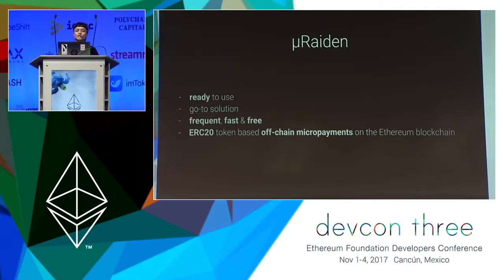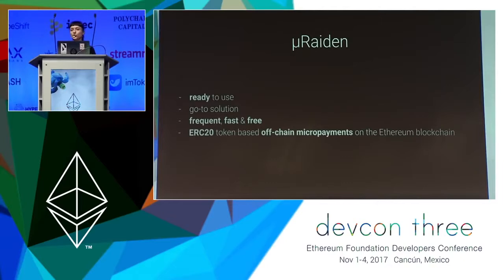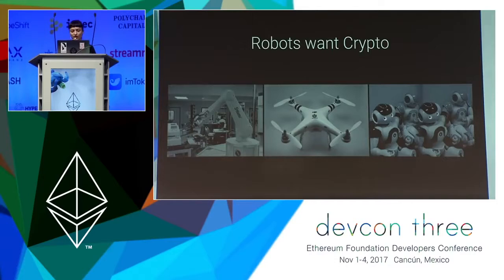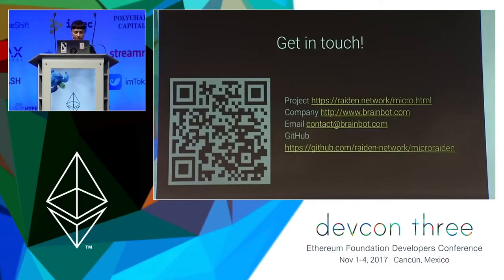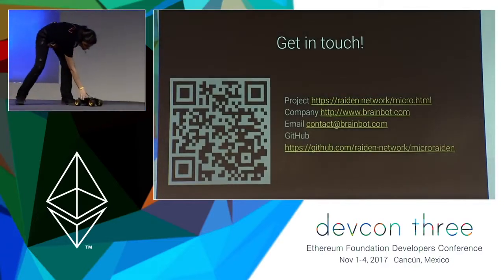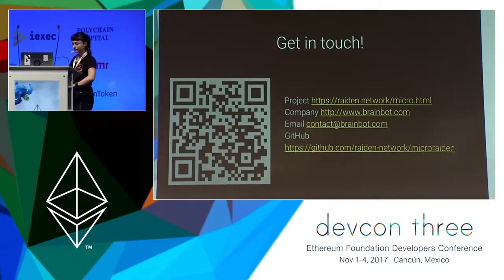In conclusion, Microradon is ready to use. It is the go-to solution for frequent, fast, and free ERC-20 token-based off-chain micropayments on the Ethereum blockchain. And don't forget — robots also want crypto. Thank you.